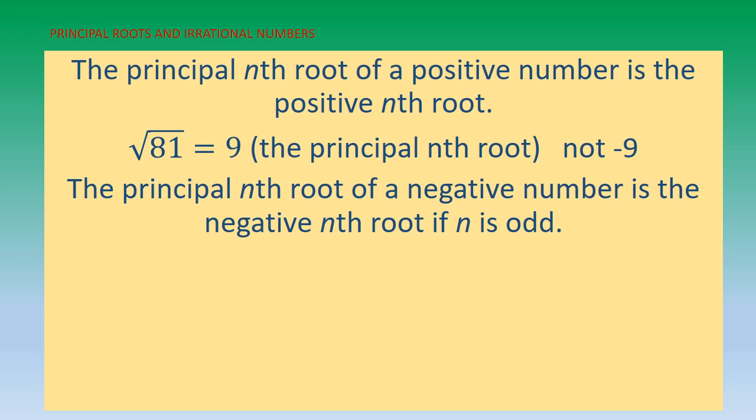The principal nth root of a negative number is the negative nth root when n is odd. For example, the cube root of −125: since n is odd and the number inside is negative 125, we factor −125 as (−5)×(−5)×(−5) = −125. Therefore, the cube root of −125 is equal to −5.